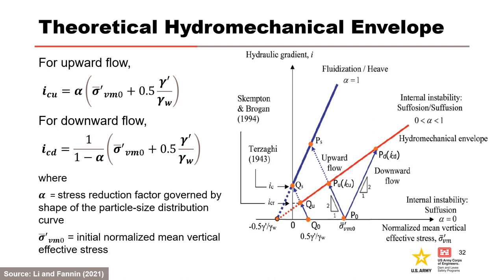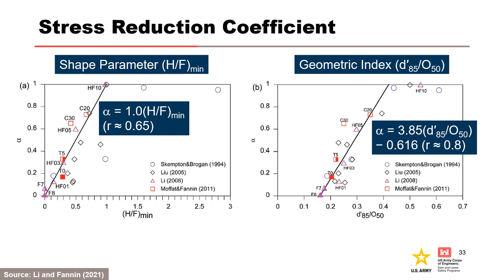Leon Fannin (2021) developed a theoretical hydromechanical envelope and relationships for critical hydraulic gradient in one-dimensional vertical seepage. It is related to the soil gradation by alpha: with alpha equals zero there is pure suffusion, alpha between zero and one is moving towards suffosion, and alpha equals one is fluidization or heave. This slide shows the variation of alpha with shape parameter (H over F minimum) and geometric index (D85/d50), where D85 is the 85th percentile of grain diameter in the finer fraction and d50 is the mean pore diameter of the coarser fraction. The improvement using the geometric index accounts for not only grain size distribution, but also grain shape and porosity of the coarser fraction.